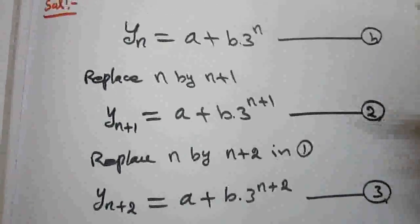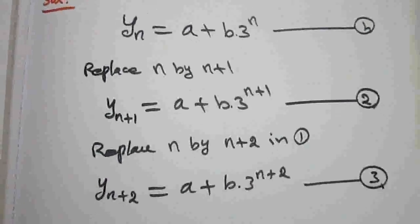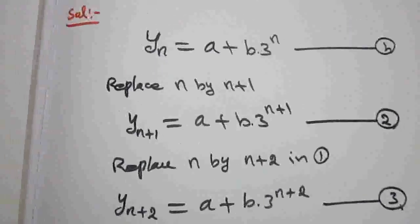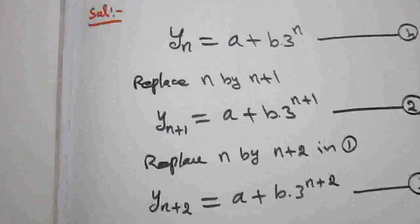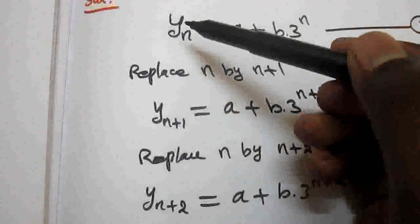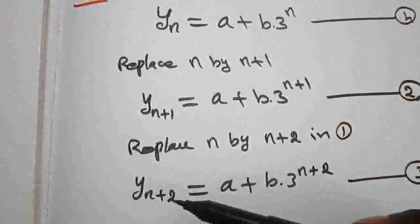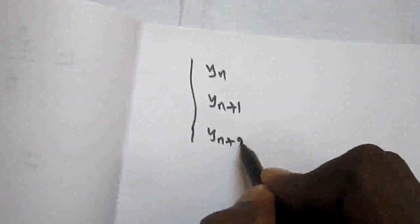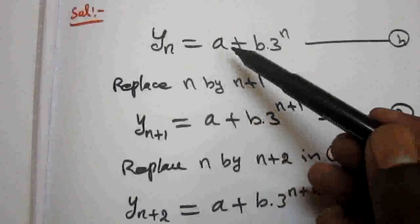Now in these three equations I am going to eliminate a and b using the determinant method. For the determinant method I am going to form a 3 by 3 determinant. The first terms yn, y(n+1), y(n+2) are all different, so take those as different terms here: yn, y(n+1), and y(n+2).